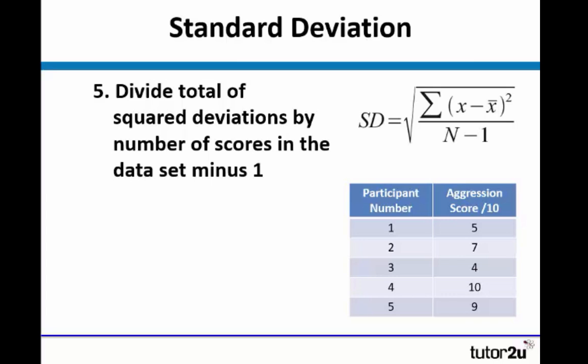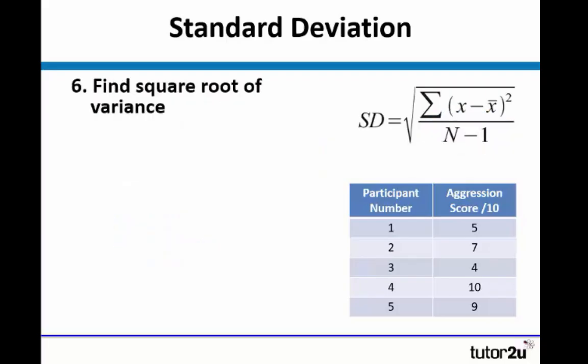The next thing that we need to do is divide the total of the squared deviations by the number of scores in the data set minus 1. So n minus 1 is obviously going to be 4. We then have to divide our squared deviations, the total of them, by 4. And our squared deviations was 26 divided by 4 is 6.5.